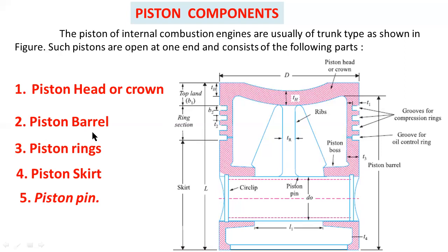The second part is the piston barrel. The portion below the piston head is called the piston barrel. The piston head or crown may be flat, convex, or concave shape, depending upon the design of the combustion chamber. It withstands the pressure of gas in the cylinder. The piston barrel is the cylindrical portion of the piston.